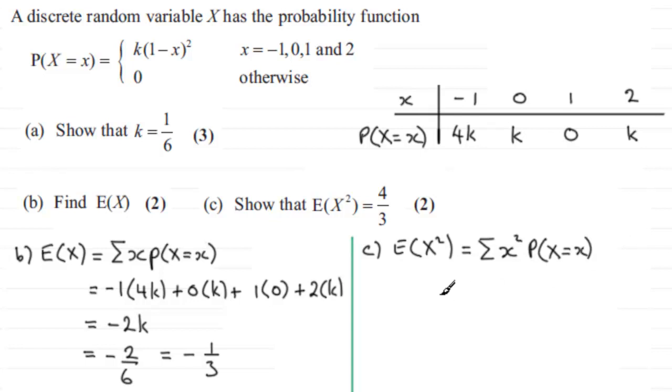So therefore that just means that E of X squared is going to equal the minus 1 squared multiplied by the probability 4k. We'll leave it in terms of k. Then it's plus 0 squared times the k, followed by 1 squared times 0 and finally 2 squared times the k.